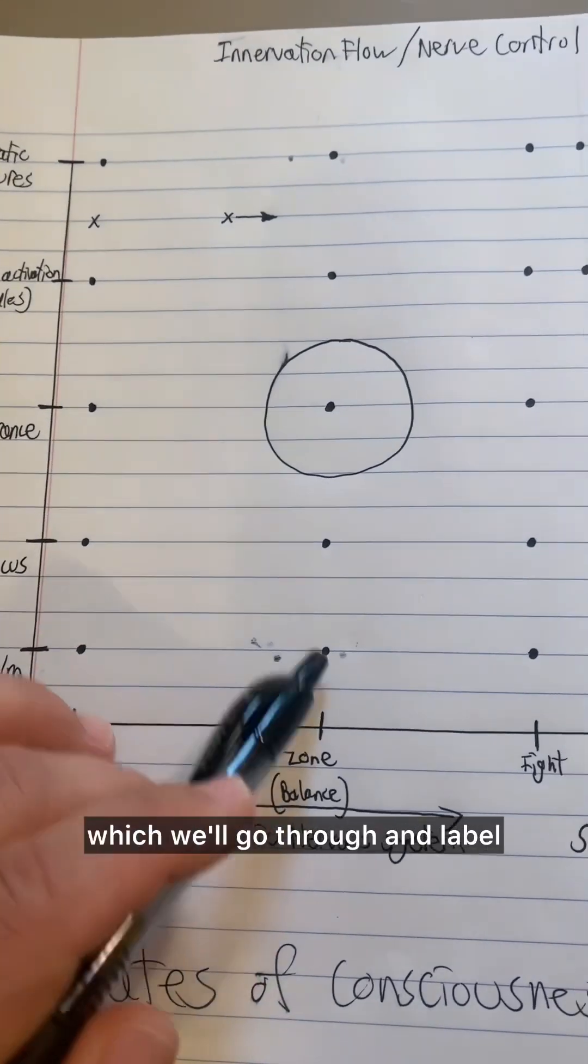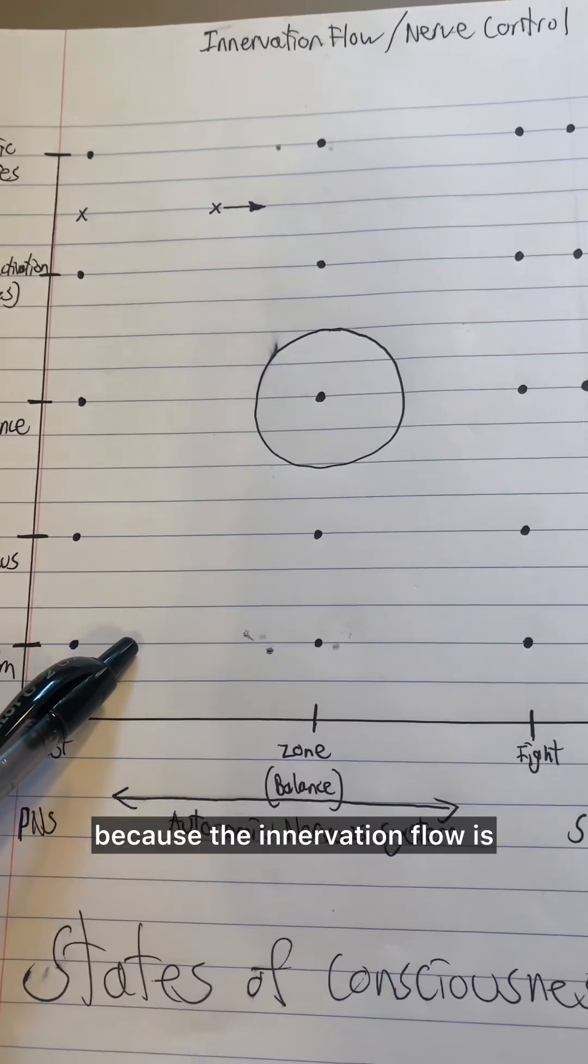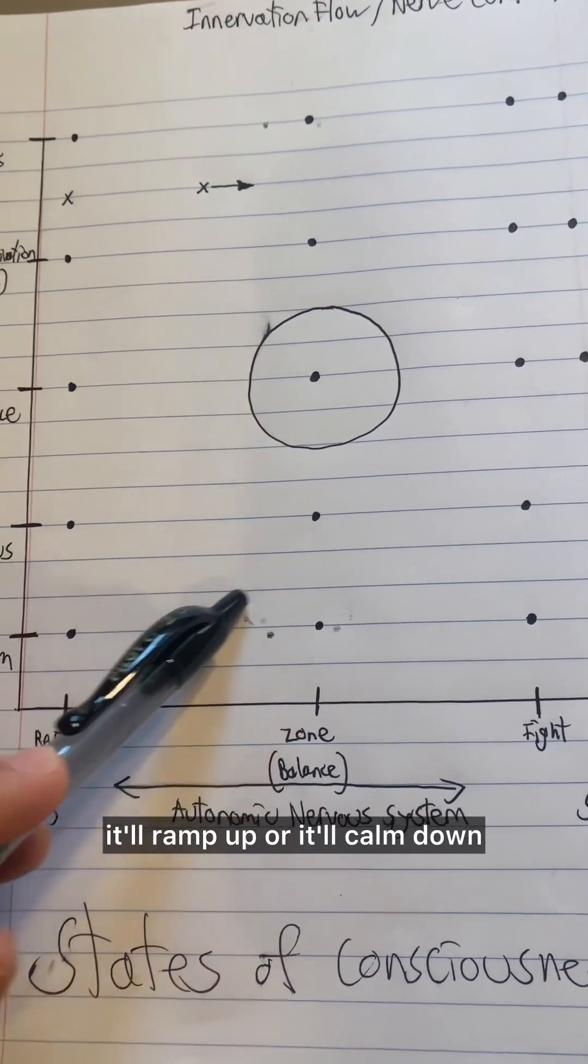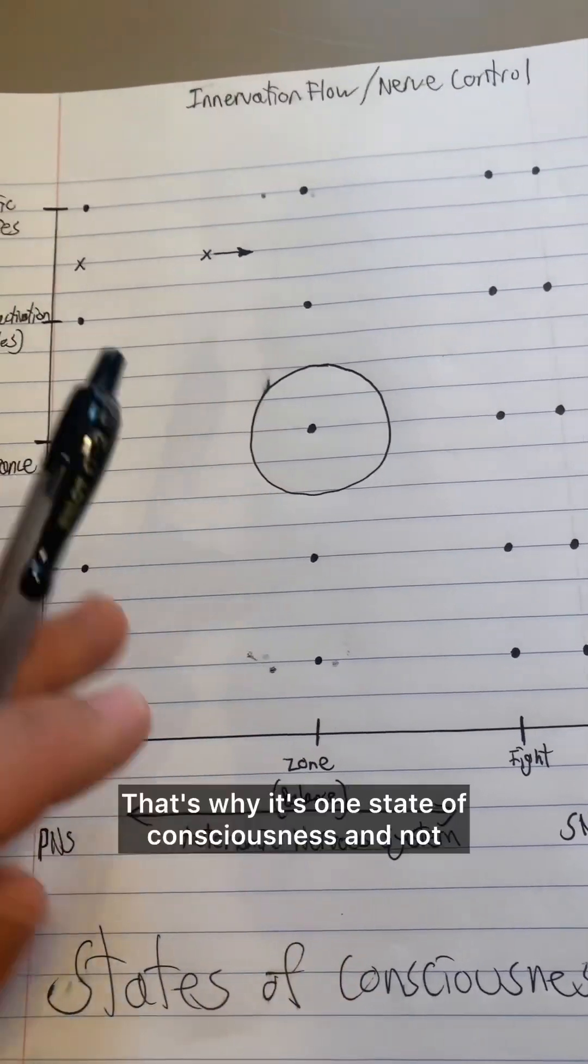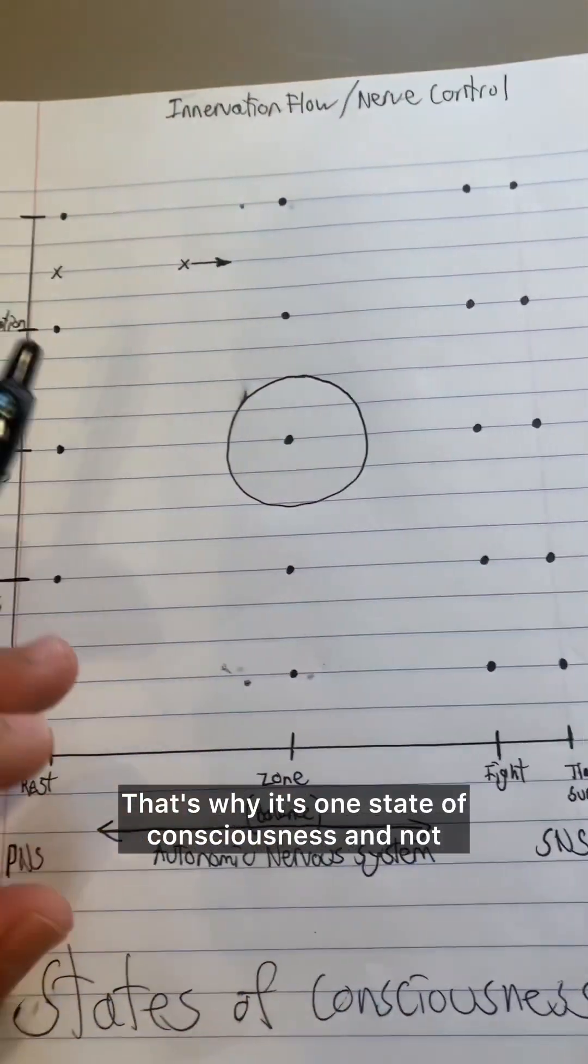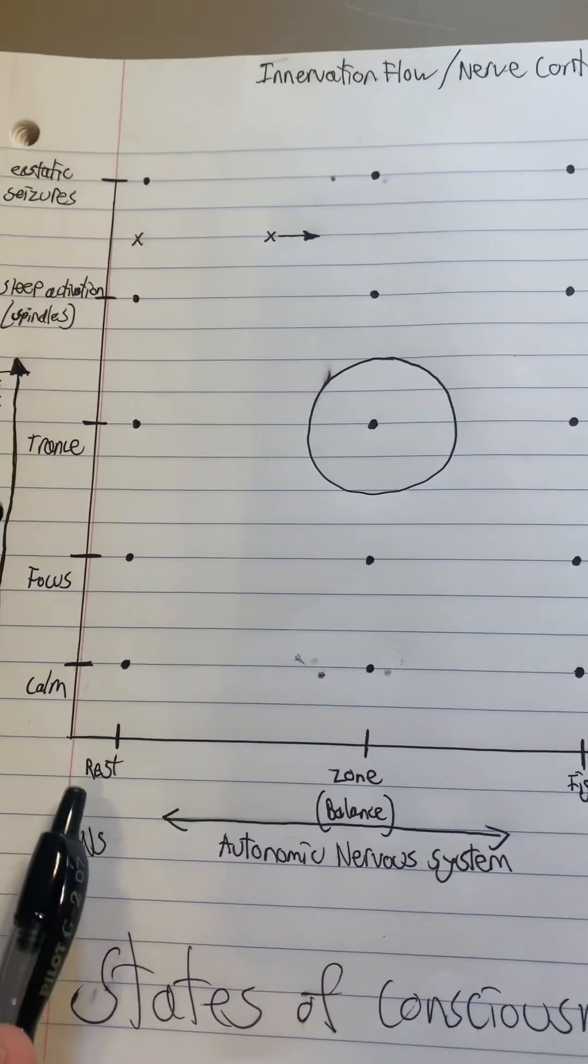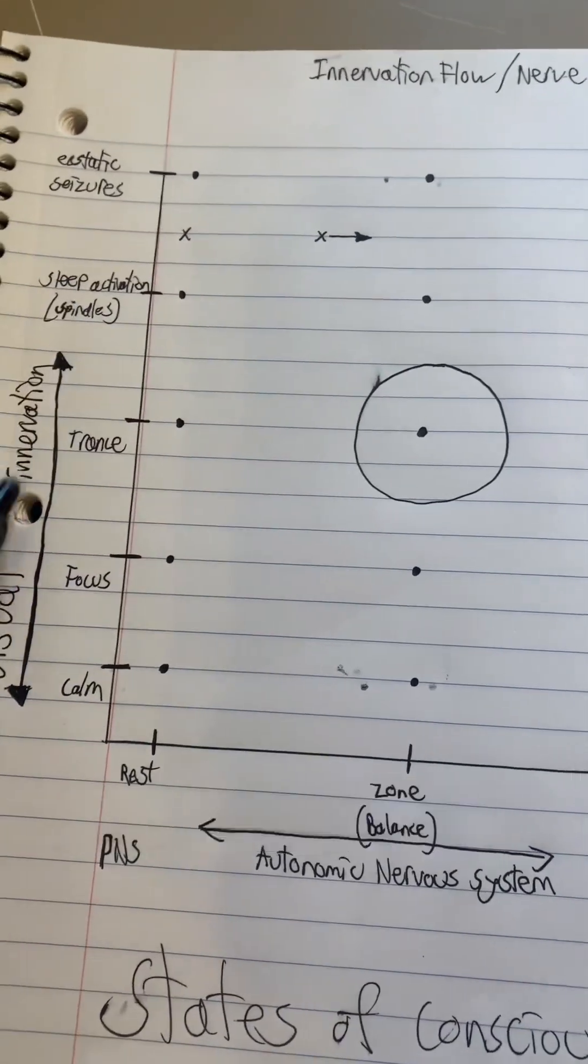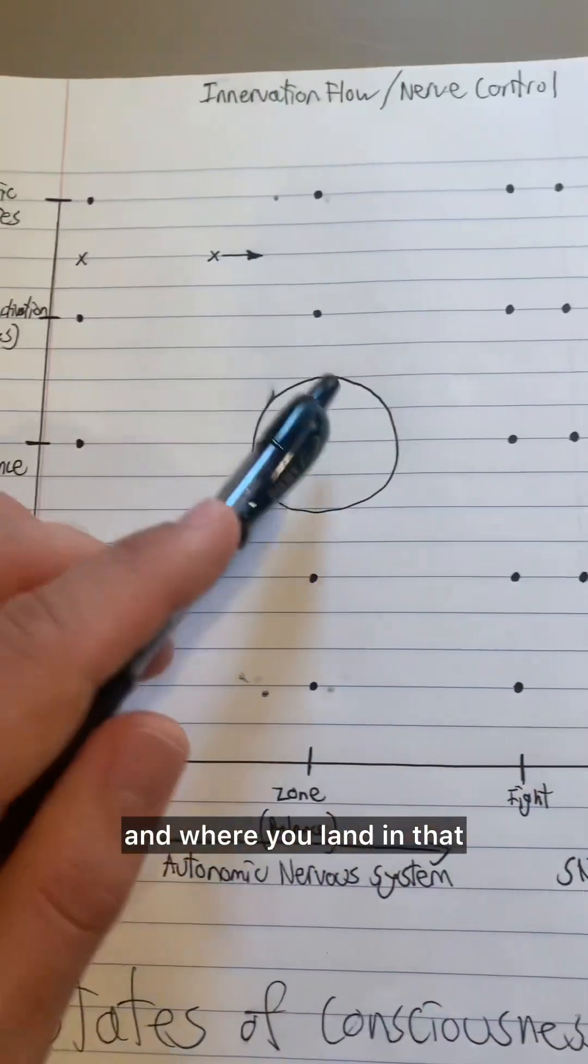So these plots here, which we'll go through and label, they're here as reference points. Because the innervation flow will ramp up, or it'll calm down, or it'll shoot in different directions. That's why it's one state of consciousness, but it's just the mechanism of nerve flow, either through the visual signals or the autonomic nervous system, and where you land in that.